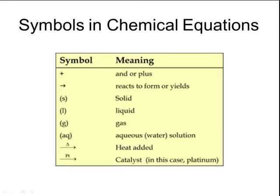In order to symbolize a chemical reaction, we often write chemical equations. Chemical equations require us to use many different symbols. In the form of a chemical equation, the plus symbol has several meanings — all essentially synonymous with each other — where a plus symbol means 'and,' or 'plus,' or 'reacts with.'